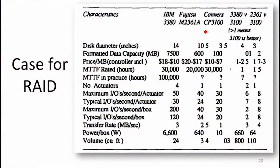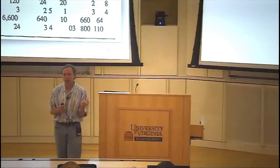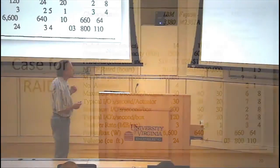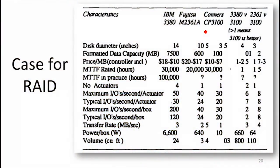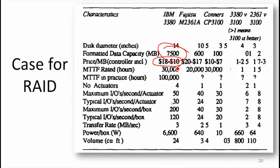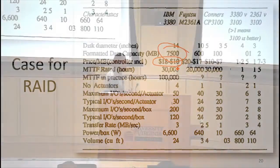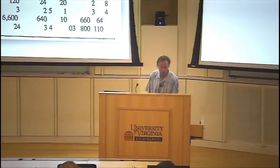This comes from the paper that introduced RAID. They were looking at the cost of disks — the cost of a big, fancy, expensive, huge disk with something like 7,000 megabytes, that's like a whole 7.5 gigabytes — and this was costing about $18 per megabyte. You can multiply 18 by 7,000, so that's around $100,000. That was something only very well-resourced organizations could afford.